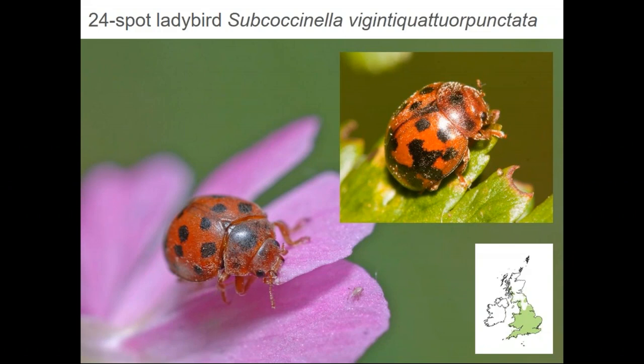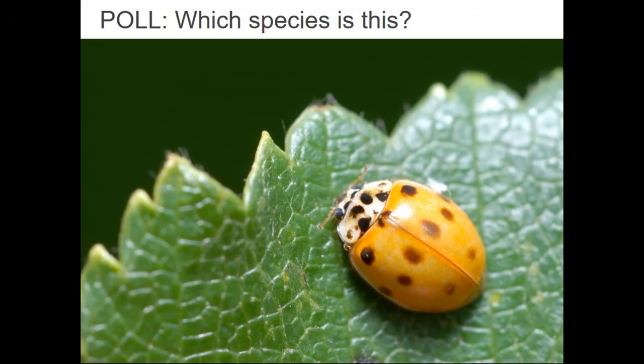The 24-spot ladybird is an absolutely stunning species — and its larva is also exquisite. It's a little hairy ladybird, one of our few species that feeds on plants, and is very common in grasslands. It's not easily confused with anything else: it has a beautiful rich reddish colour with lots of spots, sometimes with spot fusions, and is quite easy to spot when looking through grasses.